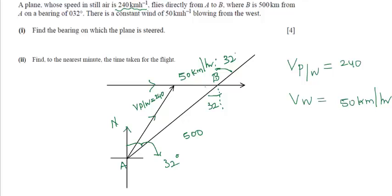This also would be 32. Since this is from west, the full angle is 90, so 90 minus 32 has to be 58 degrees. So we found this angle. And we know the full angle.